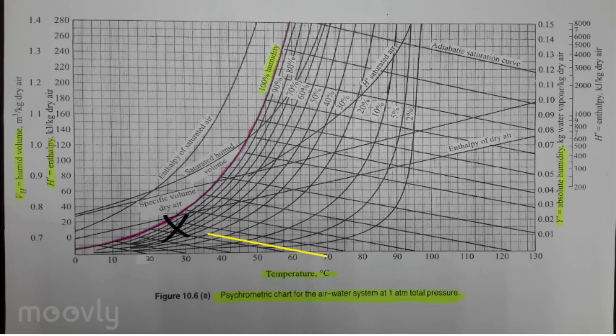Draw a constant wet bulb line from point A to the 100% humidity line to obtain the wet bulb temperature of moist air, which is around 22.5 degrees Celsius.